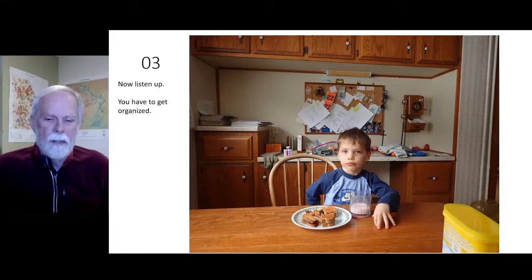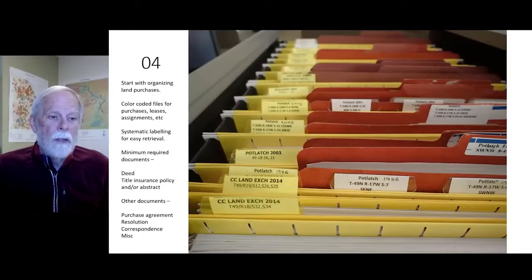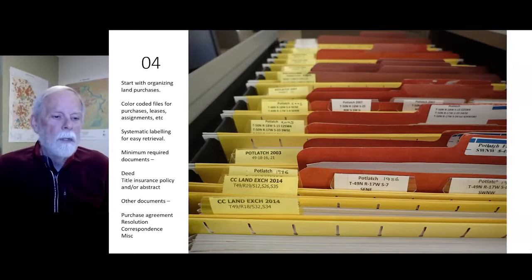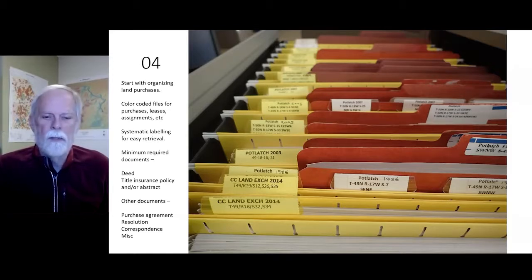You've got to get yourself organized, otherwise you're going to have a real mess. I started by organizing the land purchases with color-coded files for purchases, leases, and assignments, with a systematic labeling system for easy retrieval. Everything is on the left; files are on the right. Minimum required documents are a deed, title insurance policy, and/or abstract. Other documents include purchase agreement, resolution, correspondence, and miscellaneous.